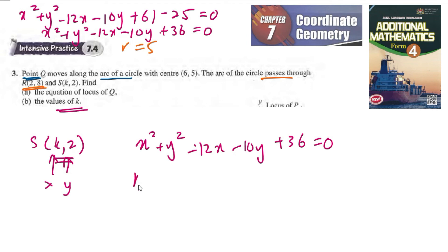So here we have k² plus y² is 2², minus 12, so x will become k, minus 10 times y is 2, plus 36 is equal to 0.